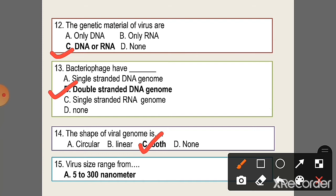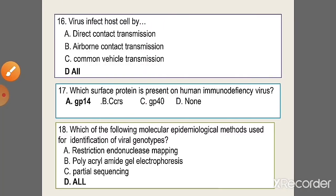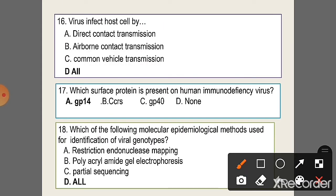Question 15: Virus size ranges from 5 to 300 nanometers. Question 16: Virus infects host cells by — all of the above: direct contact transmission, airborne contact transmission, and common vehicle transmission. Question 17: Which surface protein is present on human immunodeficiency virus? Option GP41.